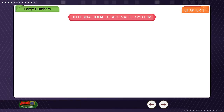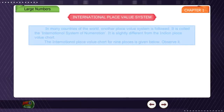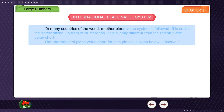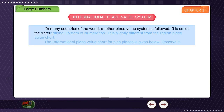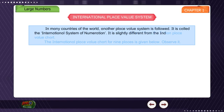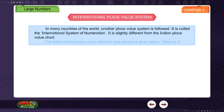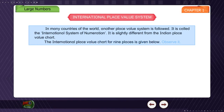International place value system. In many countries of the world another place value system is followed; it is called the international system of numeration. It is slightly different from the Indian place value chart. The international place value chart for nine places is given below.